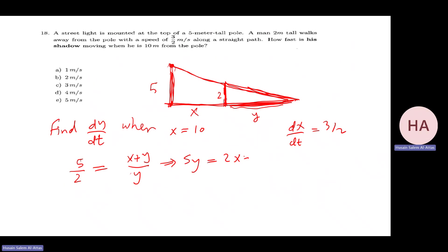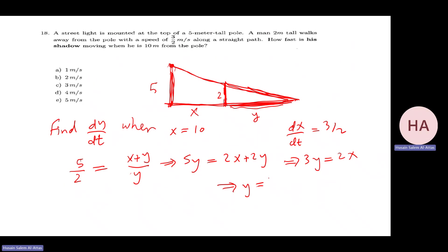Using similar triangles — big triangle and small one: 5/2 = (x + y)/y. Solving: 5y = 2x + 2y, so 3y = x, giving y = (2/3)x. Differentiating: dy/dt = (2/3)·dx/dt = (2/3)·(3/2) = 1.